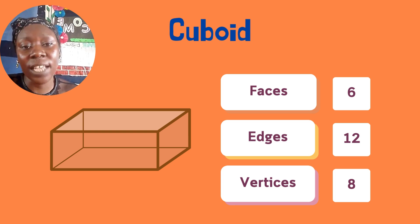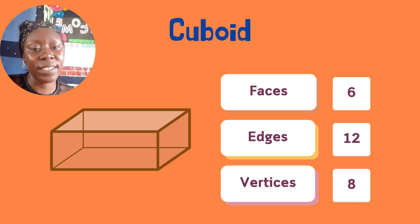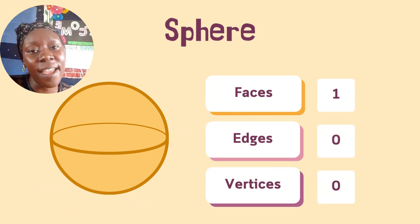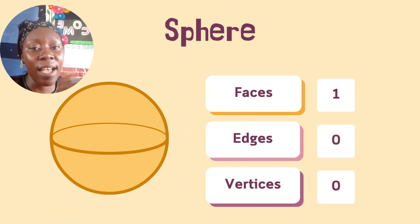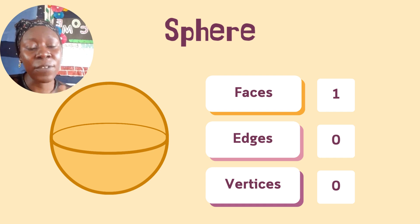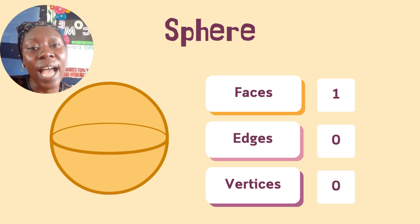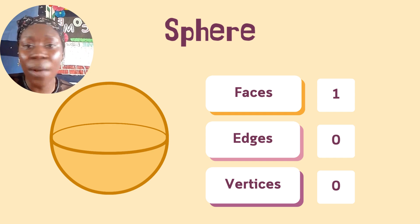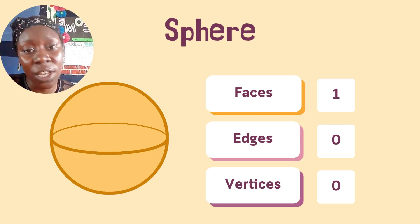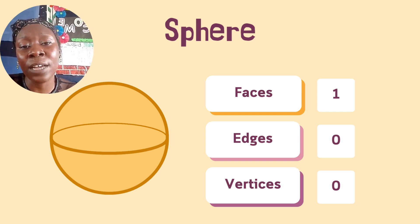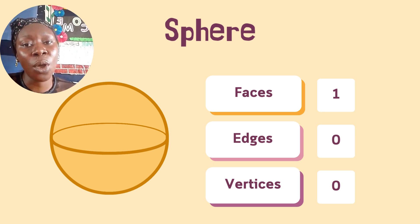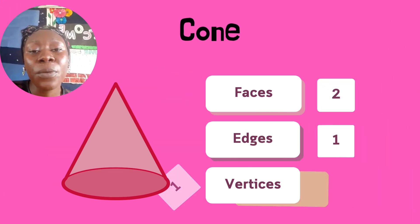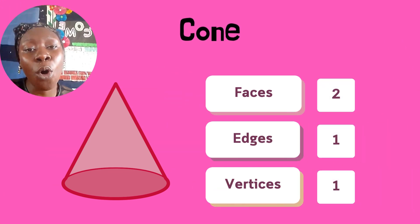The sphere — you can see how round it is. It has one face, zero edges, and zero vertices. It is just one curved face.